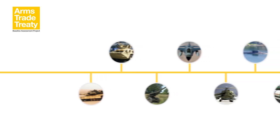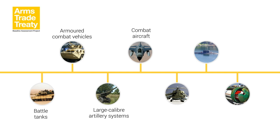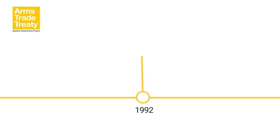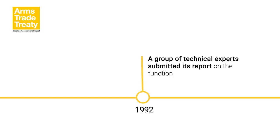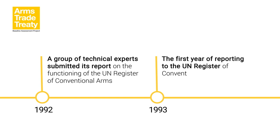The Resolution also called on Member States to provide information to this voluntary register on their annual arms exports and imports, including details regarding the transfers of seven categories of weapons: battle tanks, armoured combat vehicles, large calibre artillery systems, combat aircraft, attack helicopters, warships, and missiles or missile systems imported into or exported from their territory. In 1992, a group of technical experts submitted its report on the functioning of the UN Register of Conventional Arms, and 1993 represented the first year of reporting to the UN Register of Conventional Arms for transfers undertaken in 1992.